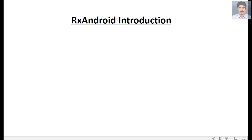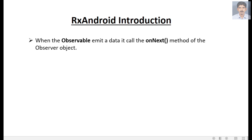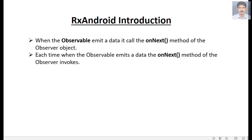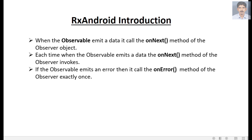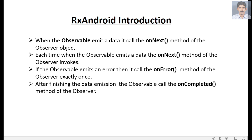When the observable emits data, it calls the onNext method of the observer object. Each time the observable emits a data item, the onNext method is invoked, and this process continues until there is no more data to emit. If the observable encounters an error, it calls the onError method of the observer exactly once. After finishing the data emission, the observable calls the onCompleted method of the observer.